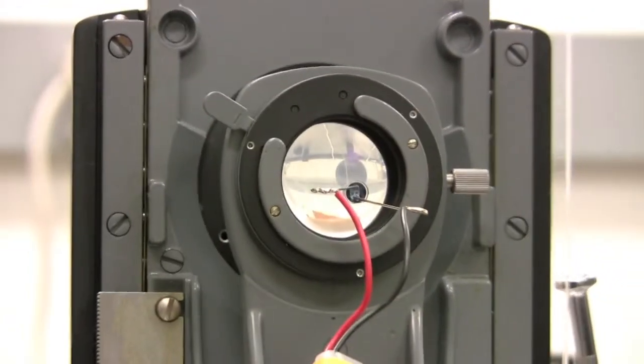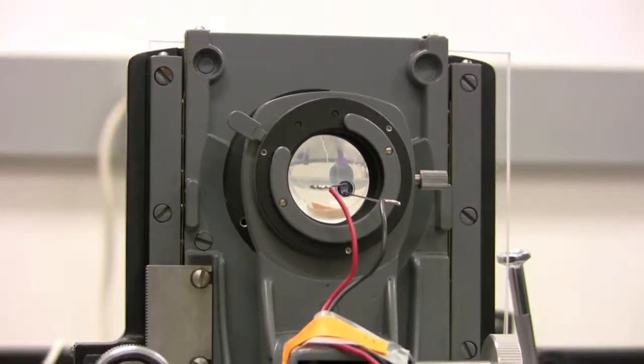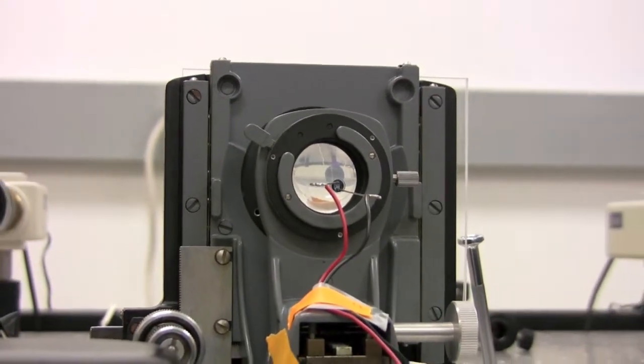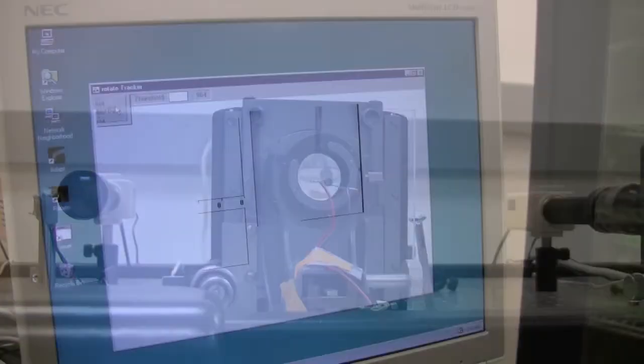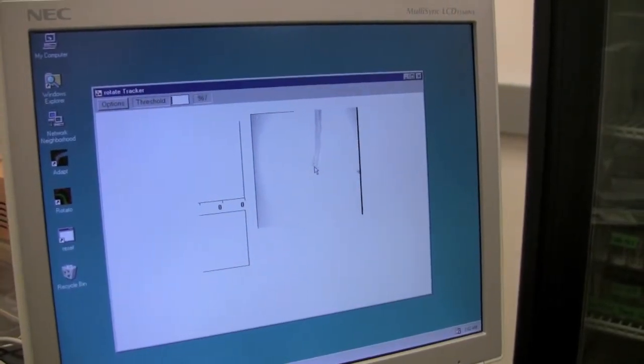So one of the students is working on using some technology that we've developed that does image analysis and constrains the root at certain angles for long periods of time to ask the question, how disrupted are these plants in their gravity response given that they're missing auxin transporters?